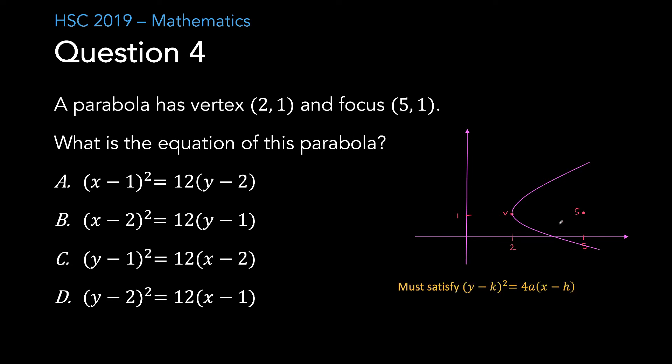That means it must satisfy y minus k all squared equals 4ax minus h. Remembering the vertex was at 2, 1. How did I get a is equal to 3? a is your focal distance, the distance between your vertex and your focus which is 3 units. h represents your x coordinate of your vertex and k represents your y coordinate. Popping that in I get y minus 1 squared is equal to 12 bracket x minus 2, leaving me with the answer C.